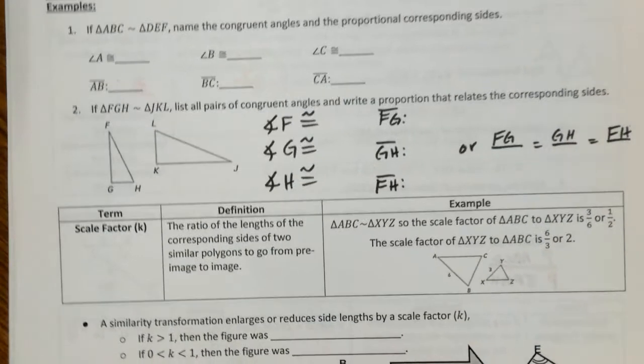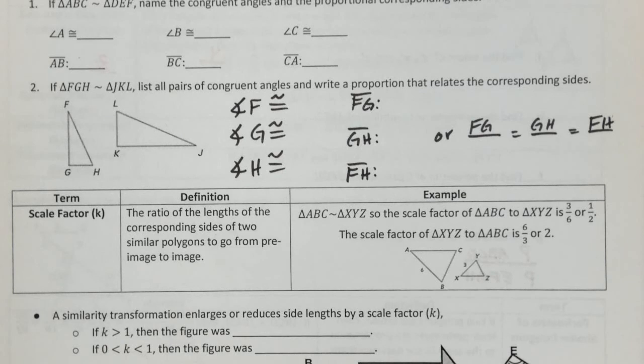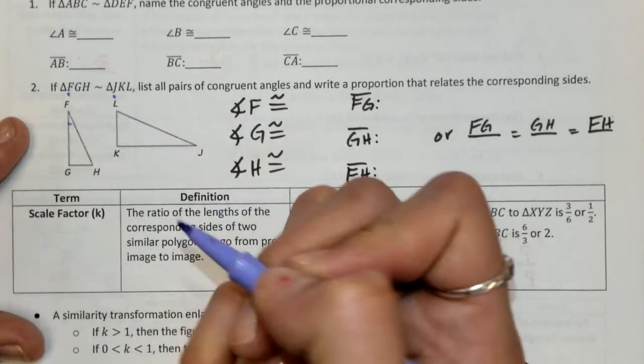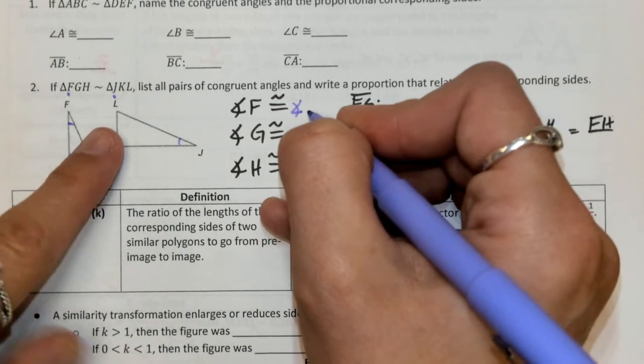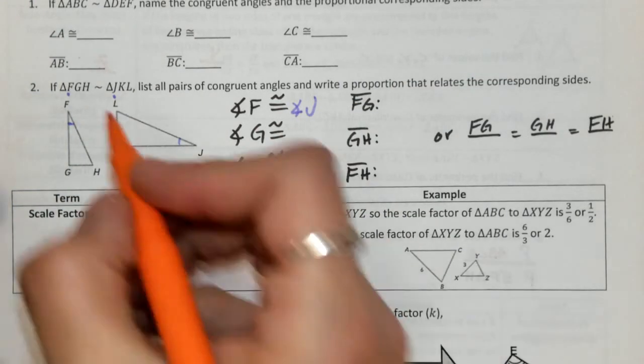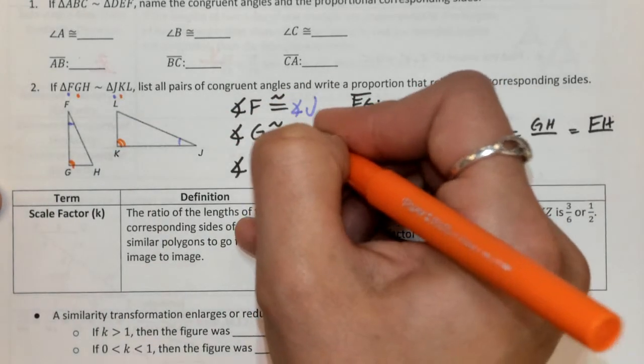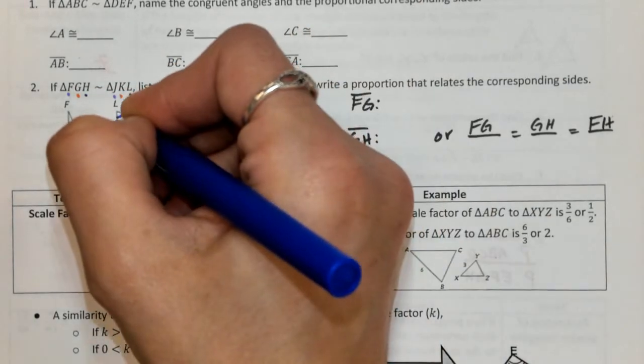When we get down to number 2, we talked about in the video about what similar polygons are, similar figures are, the notation, and how our corresponding parts, we still find them the exact same way as when we had congruent figures. It's just now our sides are no longer congruent. Our sides will be proportional. The sides will correspond. So here we still go with, okay, F was our first. We're looking at angle F right here, will correspond with the first letter over here, angle J. So we don't want to look at F and L. We need to look at the name. So angle F will correspond and therefore be congruent to angle J. Then we have angle G right here, will correspond with angle K. So these two will be congruent. And then lastly, we have angle H, will correspond with angle L, making those congruent.